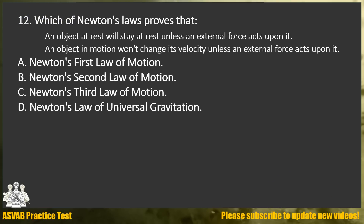Question 12. Which of Newton's laws proves that an object at rest will stay at rest unless an external force acts upon it, and an object in motion won't change its velocity unless an external force acts upon it? A. Newton's first law of motion. B. Newton's second law of motion. C. Newton's third law of motion. D. Newton's law of universal gravitation.